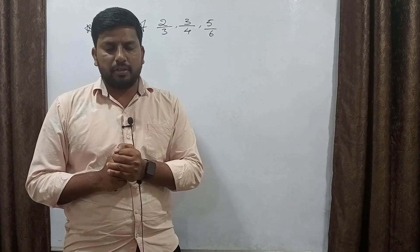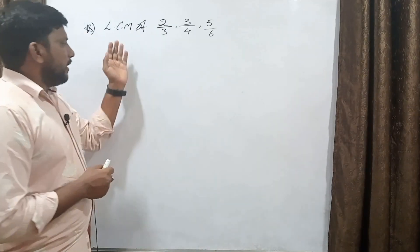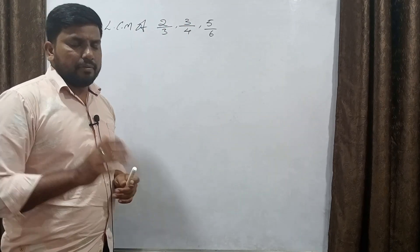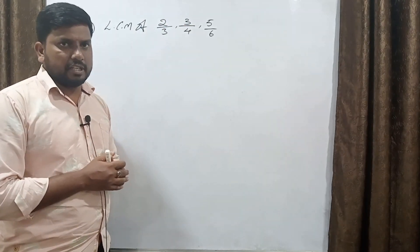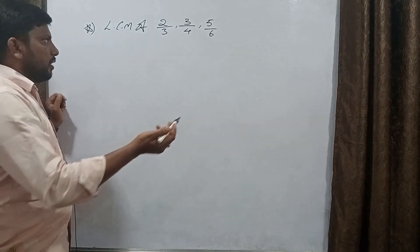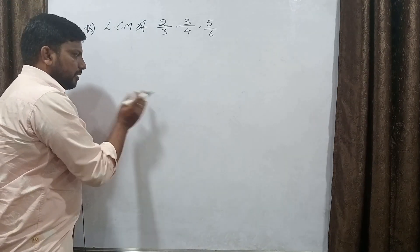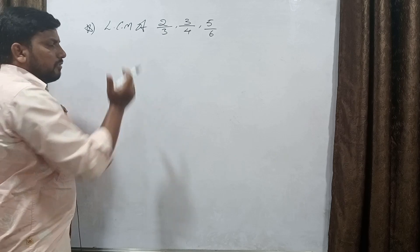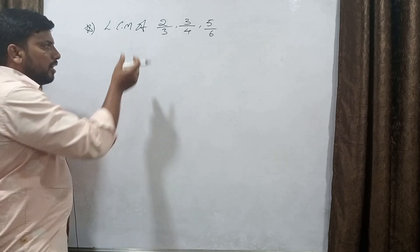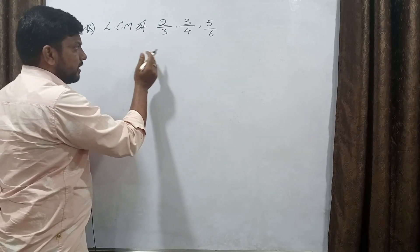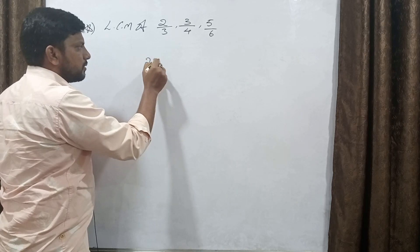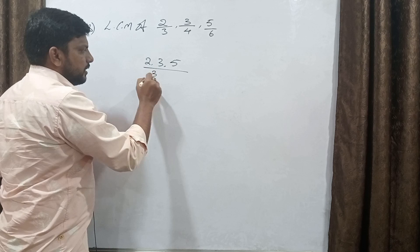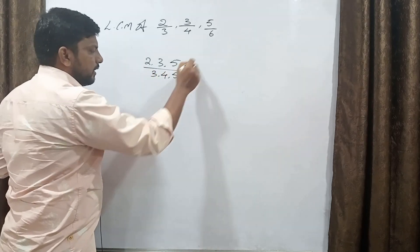We will find the LCM of fractions. For example: 2/3, 3/4, and 5/6. In fractions, the LCM is found by taking the LCM of the numerators and the HCF of the denominators.